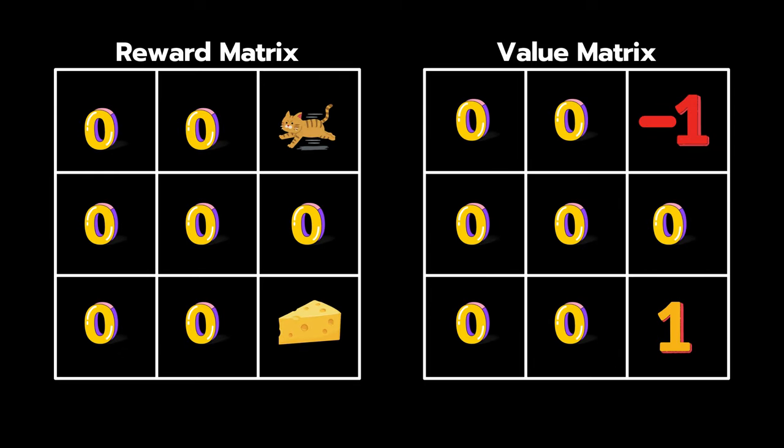As before, we'll use a reward matrix and a value matrix. The value matrix is initialized with zeros everywhere except at the terminal states 0,2 and 2,2 where the values are minus 1 for Tom and plus 1 for the cheese respectively.